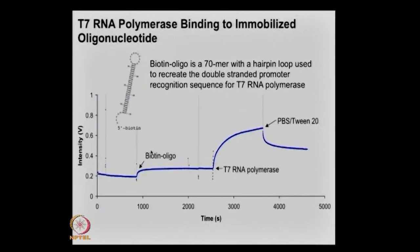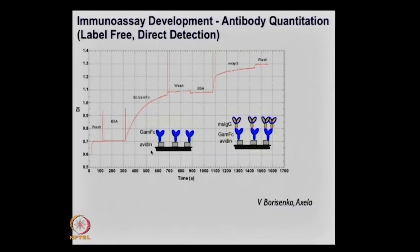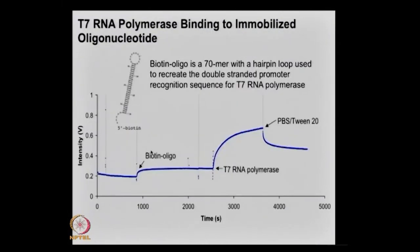This is a similar experiment on the binding of RNA polymerase to the immobilized oligo. It shows the different levels of application one can achieve — not only strong antibody-protein binding, but also protein-protein, DNA-protein, polymers, or cells.